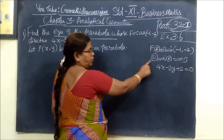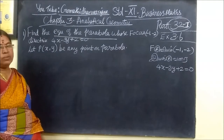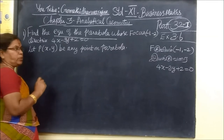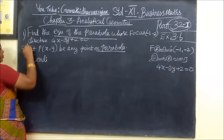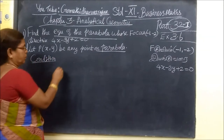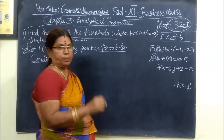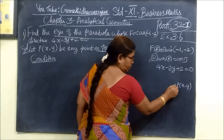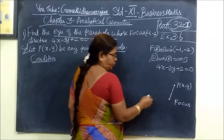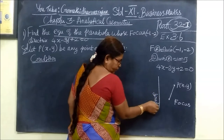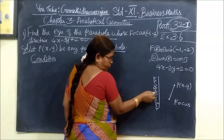The focus is at minus 1, minus 2. The directrix is 4x minus 3y plus 2 equals 0. For a moving point x, y — F is the focus, and the directrix is given. The equation of the parabola uses the characteristic condition. Here the directrix is 4x minus 3y plus 2 equal to 0.